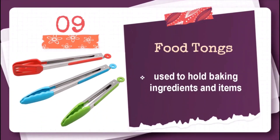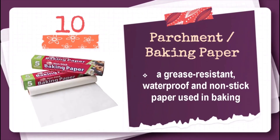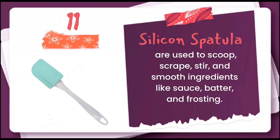Food tongs are used to hold baking ingredients and items. Parchment or baking paper is a grease-resistant, waterproof, and non-stick paper used in baking. Silicone spatula is used to scoop, scrape, stir, and smooth ingredients like sauce, butter, and frosting.